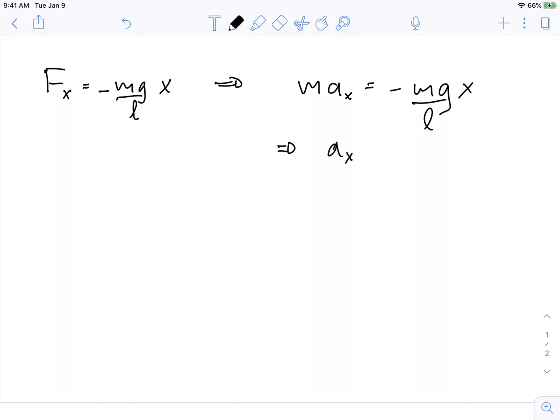Or, you know, the m's cancel out and we see we get this. Well, compare this to simple harmonic motion. Remember, from simple harmonic motion, we have the acceleration in the x direction is equal to negative omega squared times x, the position.